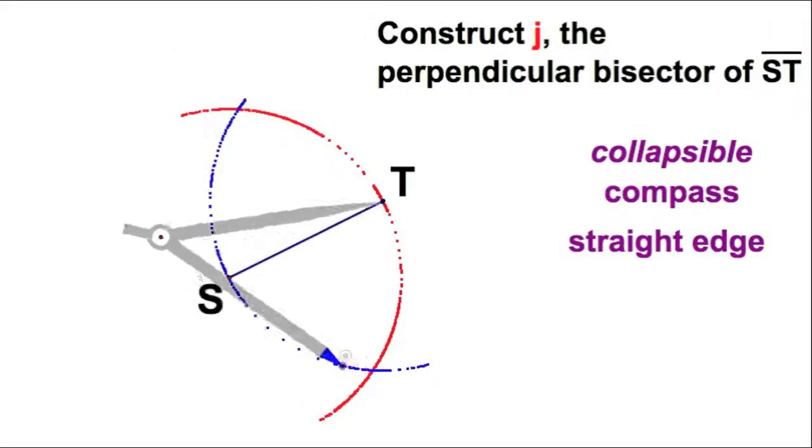Yeah, that looks good. And you can see there are indeed two points of intersection.